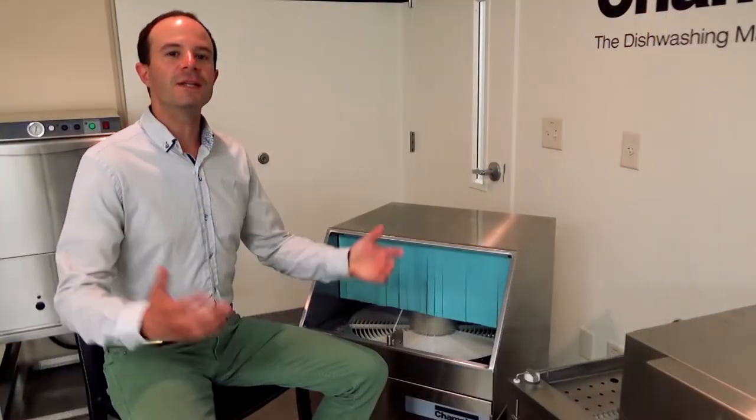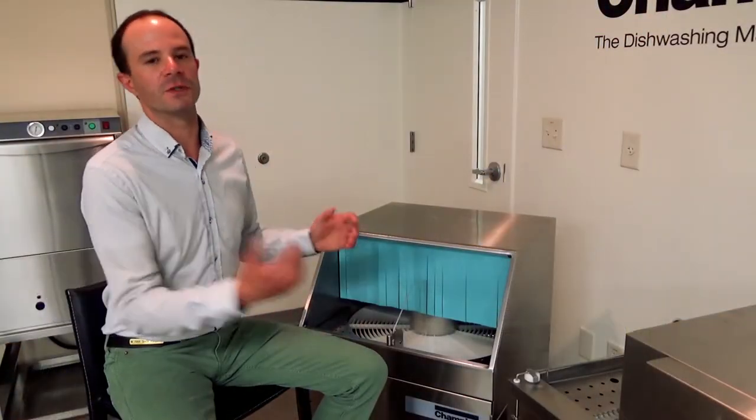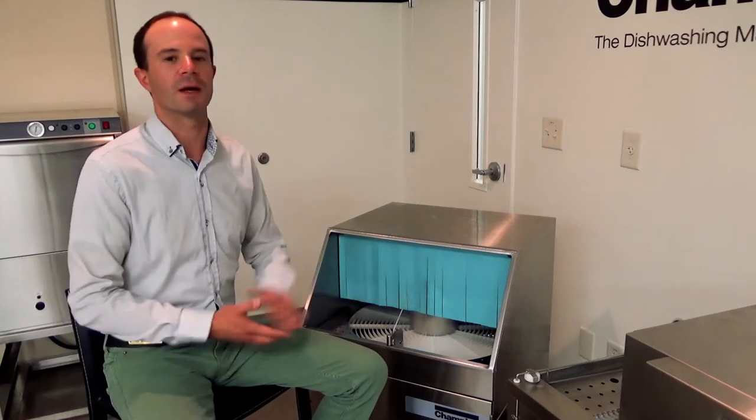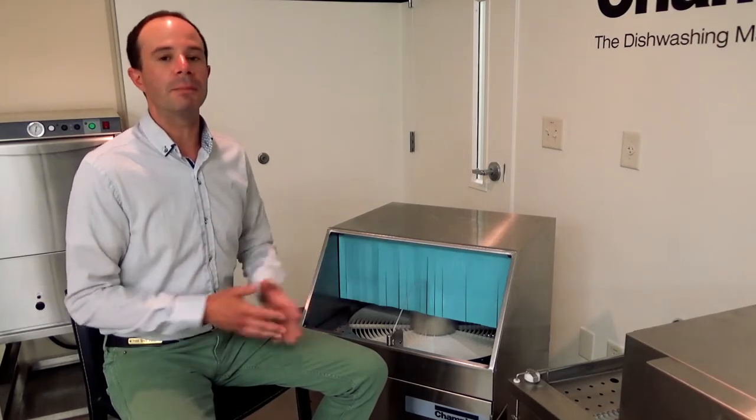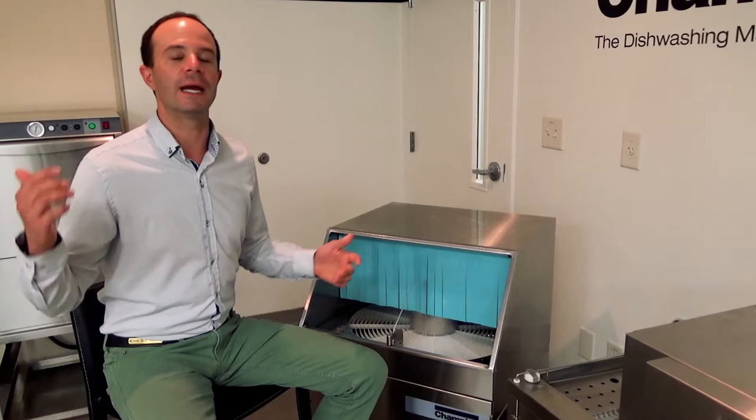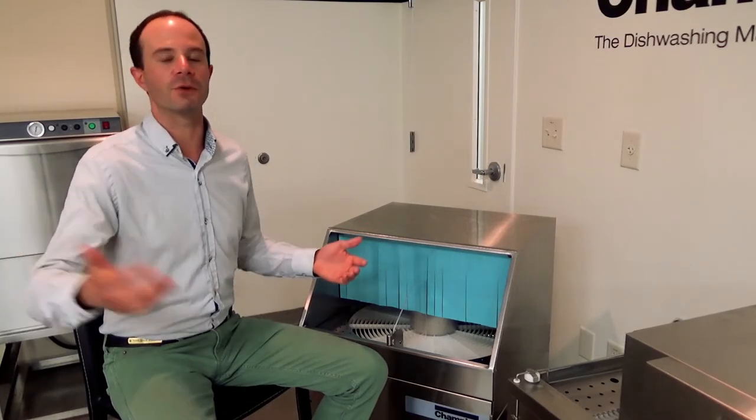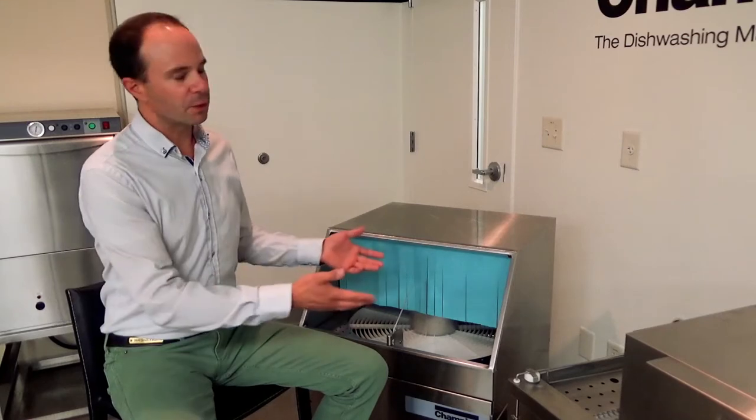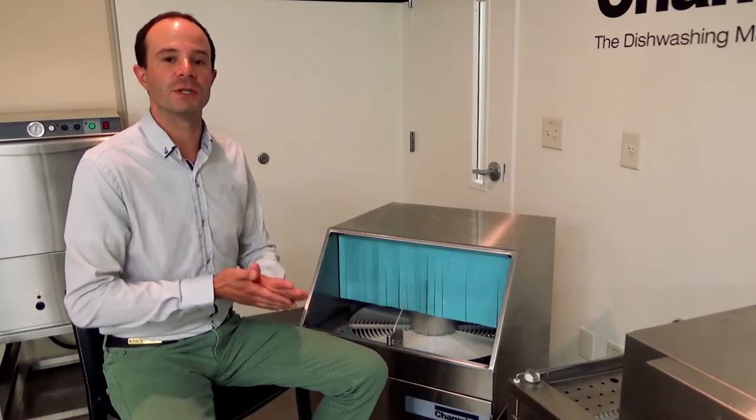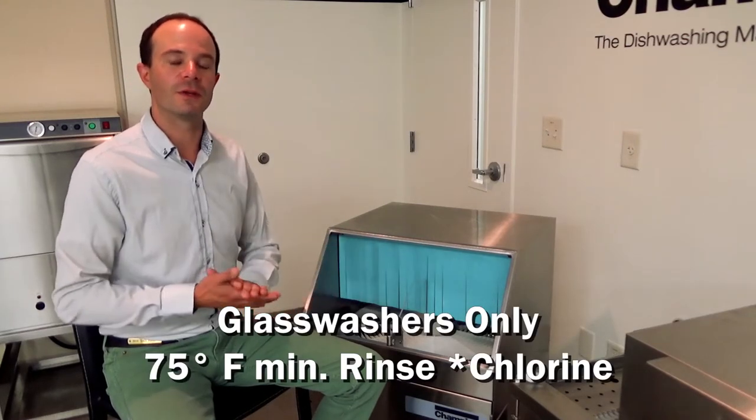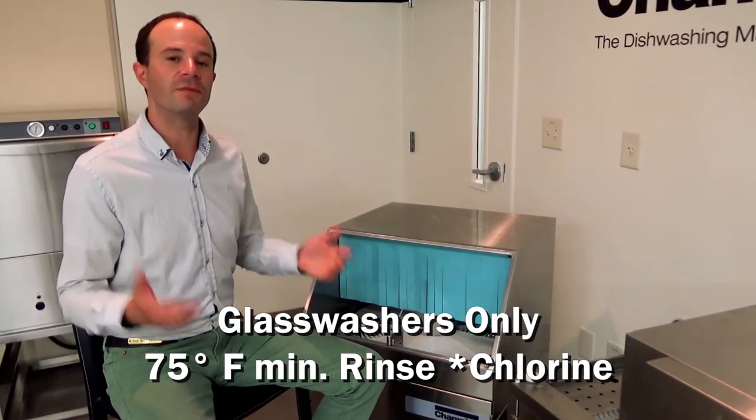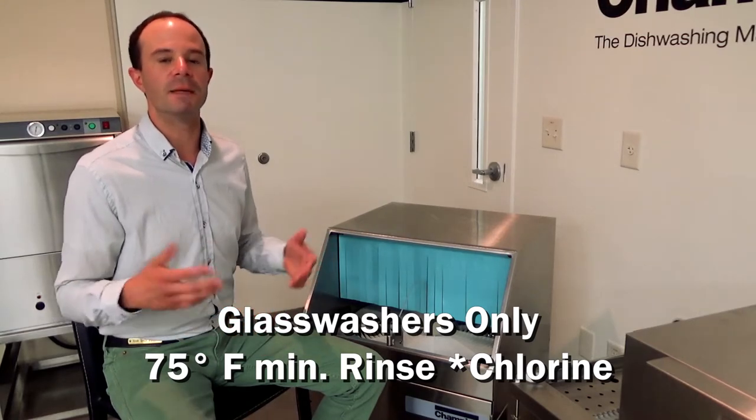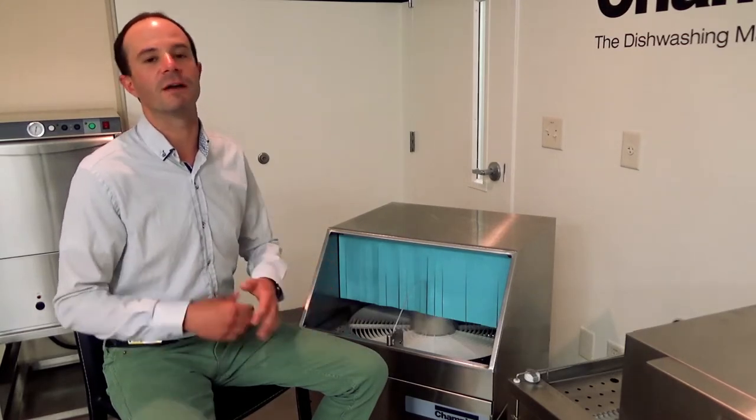Next up, let's cover our glass washers. NSF gives us a special provision for dedicated glass washers like these models I have right here. They operate very similarly to a low temperature undercounter or door machine where they wash at 120 degrees Fahrenheit. If we're using a chlorine-based solution sanitizer as our final rinse, our final rinse temperature has to meet a minimum requirement of 75 degrees Fahrenheit.